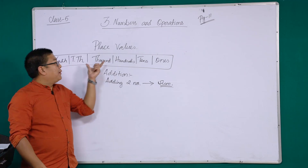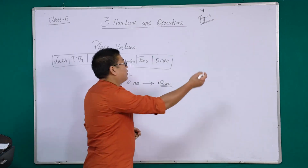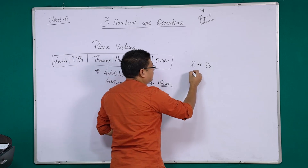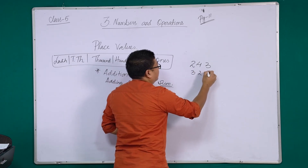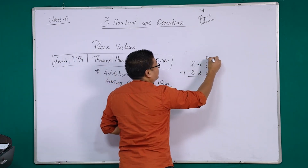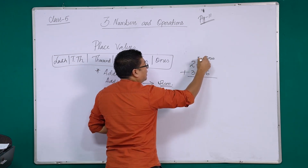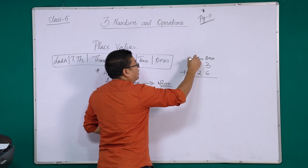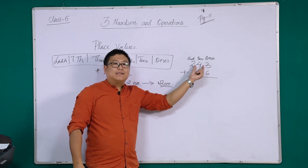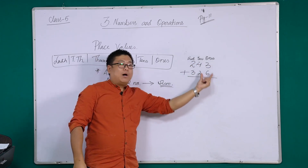In addition, the place value plays a very important role. Let's see how it works. For instance, I take two three-digit numbers. This three is at one's place. The four and two are at tens place, and two and three are at hundreds place. Please keep in mind that your ones, tens and hundreds should be in one column.